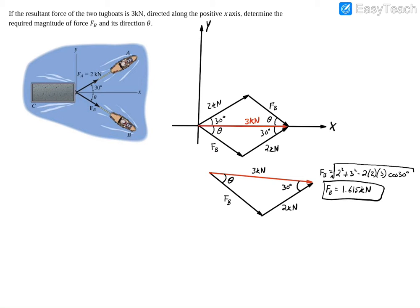So here's our magnitude of the resultant force FB, and we can go ahead and actually fill that in here on our triangle. So 1.615 kilonewtons.